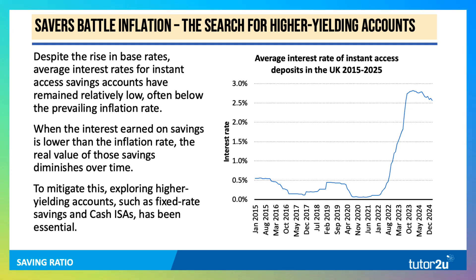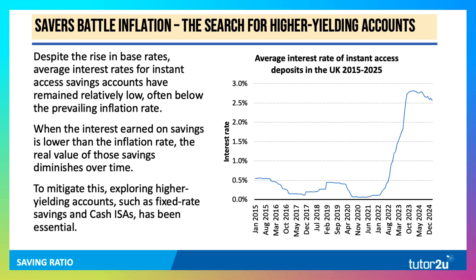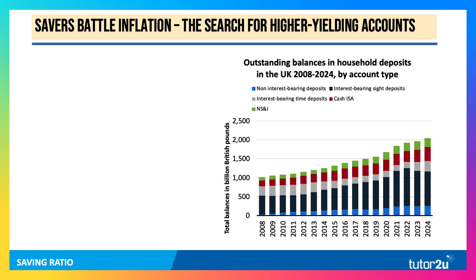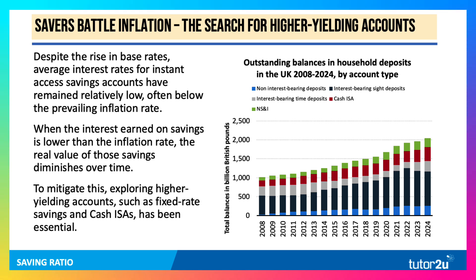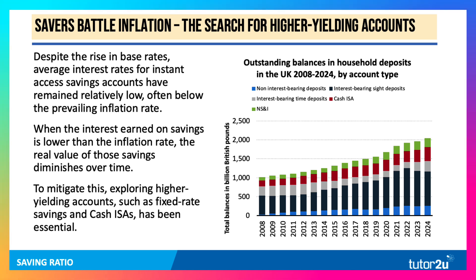People are looking at fixed-rate savings, where they hold their money at a fixed rate for a year or two, and putting money into cash ISAs, where the interest is free of tax. You can see what's been happening to balances in the financial sector — there are over £2 trillion in savings accounts in the UK. Notice the growth of national savings and investments where the rate is index-linked, the growth of cash ISAs, and interest-bearing time deposits where people sacrifice some liquidity to get rates of 4%, 5%, or 6%. This is what people do in times of inflation — they seek the best rate of return for their money.